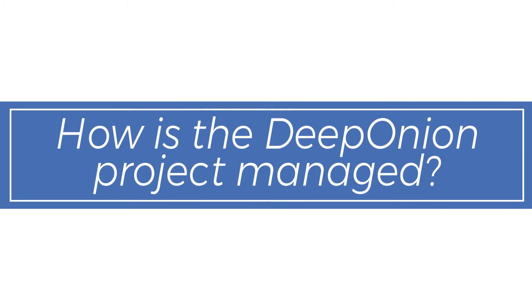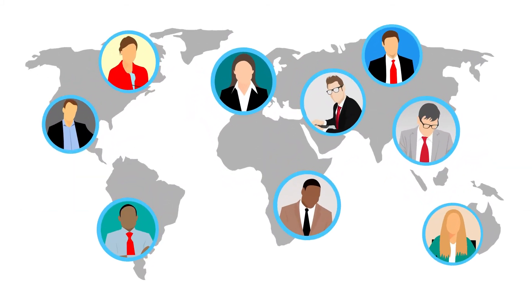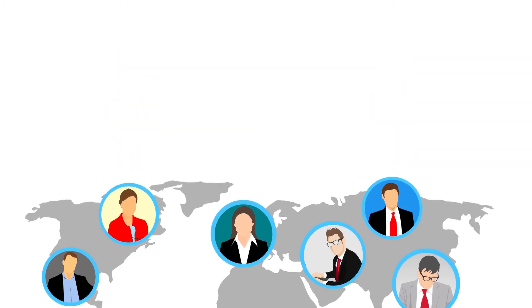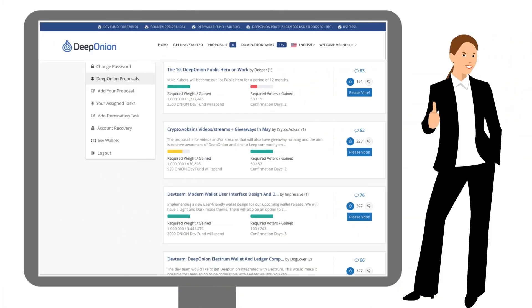How is the Deep Onion project managed? Deep Onion is managed by a community of members from different parts of the world. The project has a voting platform that allows each member to vote on ideas to make Deep Onion better.